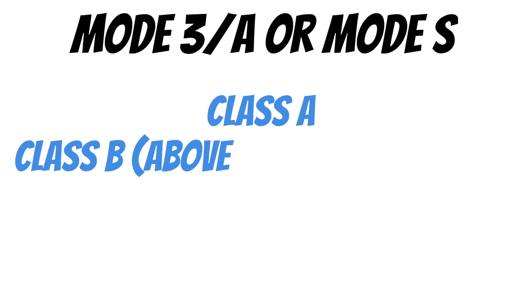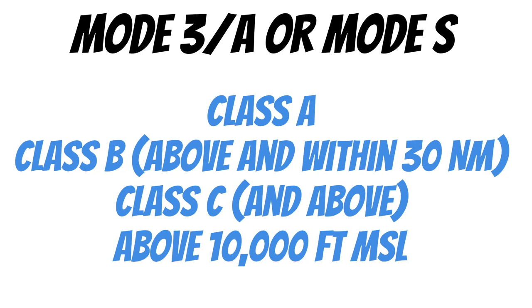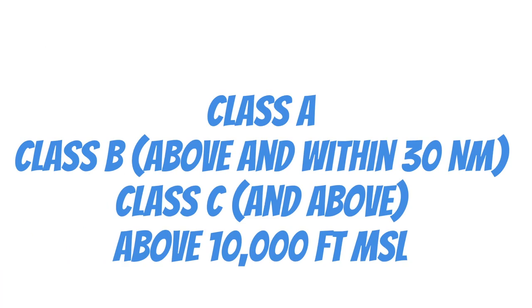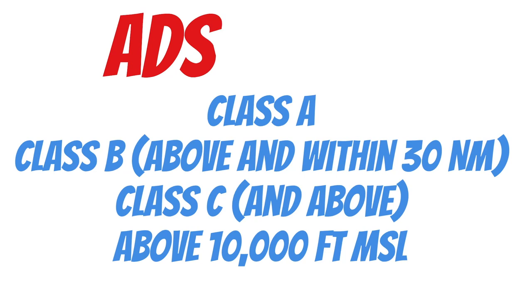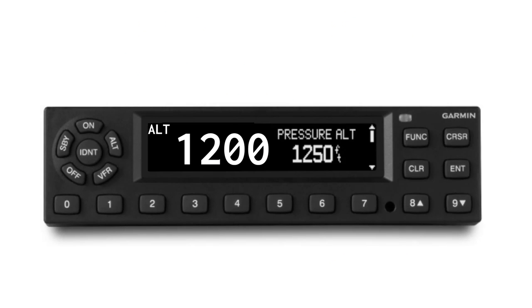We need to have our transponder on and reporting Mode C altitude in certain airspaces. You need either a Mode 3A or Mode S transponder with altitude reporting capability for Class Alpha airspace, Class Bravo, above and within 30 miles of Class Bravo, Class Charlie, above Class Charlie, and any time you go above 10,000 feet MSL. Also, if you want to go into any of these airspaces, you need ADS-B out — equipment that uses satellite technology instead of radar to give ATC a much more accurate picture of where your airplane is.